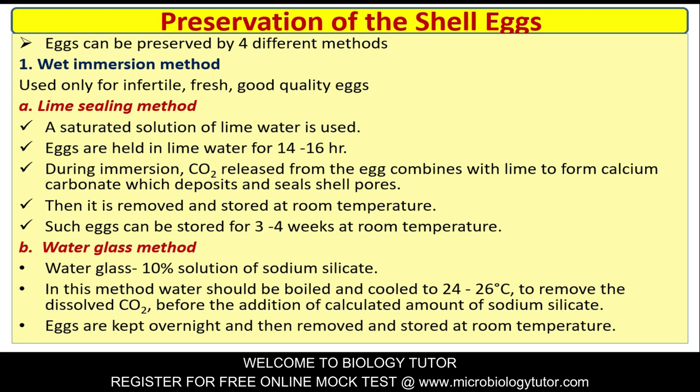Water glass method: A 10% solution of sodium silicate is used. Water should be boiled and cooled to 24 to 26 degrees Celsius to remove dissolved carbon dioxide before the addition of the calculated amount of sodium silicate.